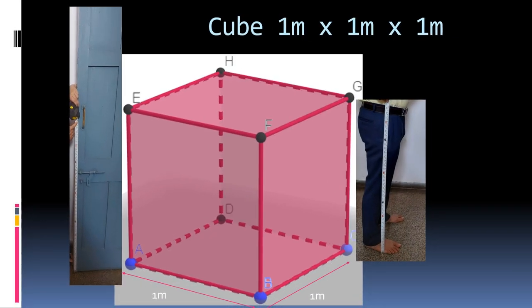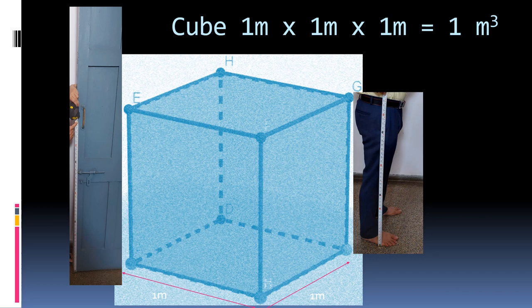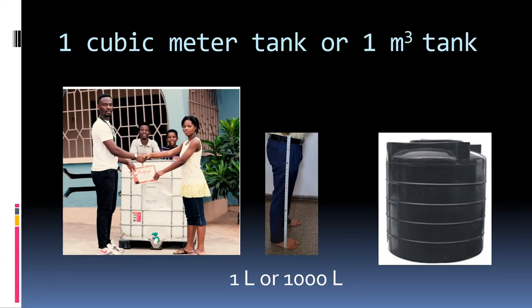Now let's see again the cube of one meter by one meter by one meter. Imagine the cube is filled with water. How much water will be filled in this one meter cube? This is an actual one cubic meter tank photograph.